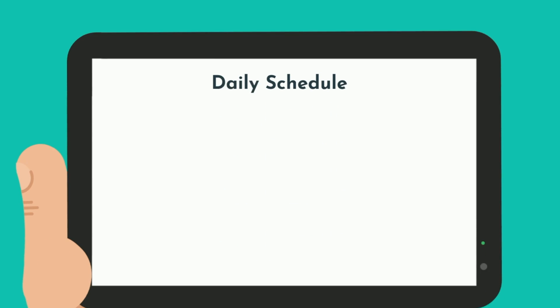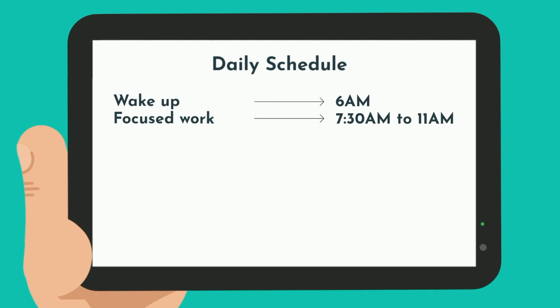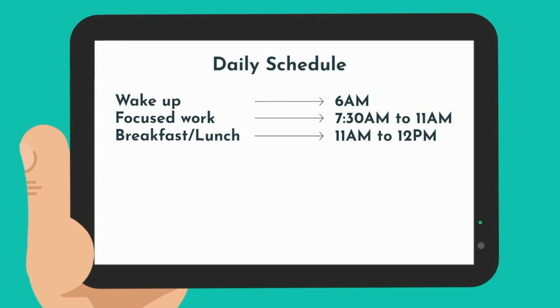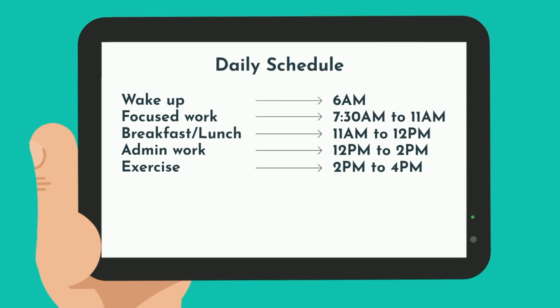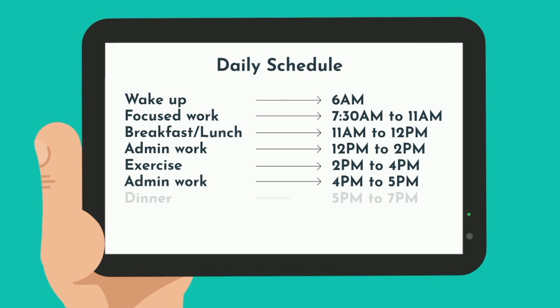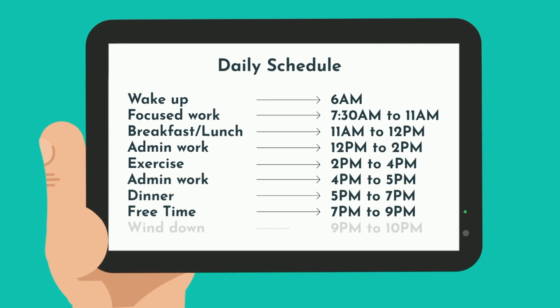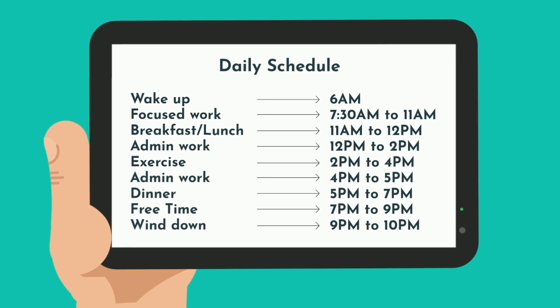My schedule looks like this. I wake up at 6am, do focus work from 7:30 to 11, breakfast/lunch from 11 to 12, admin work 12 to 2, exercise 2 to 4, some more admin work 4 to 5, dinner from 5 to 7, free time 7 to 9, and I wind down from 9 to 10.